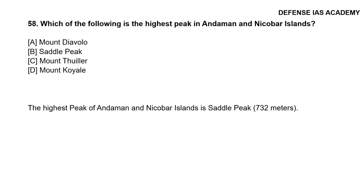Question 58: Which of the following is the highest peak in Andaman and Nicobar Islands? The correct answer is option B, Saddle Peak. The highest peak of Andaman and Nicobar Islands is Saddle Peak at 732 meters.